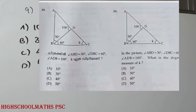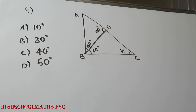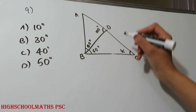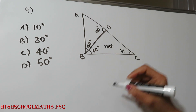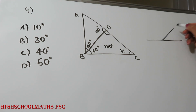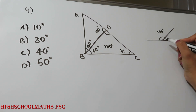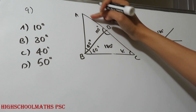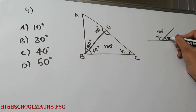In this picture, AB is equal to 30 degrees, DBC is equal to 60 degrees, and ADB is equal to 100 degrees. What is the degree measure of K? In a triangle, the angles sum to 180 degrees. On a straight line, the total angle notation is 180 degrees. If we consider 100 degrees, we have 180 minus 100 equals 80 degrees. Then using the remaining angles, we find K.